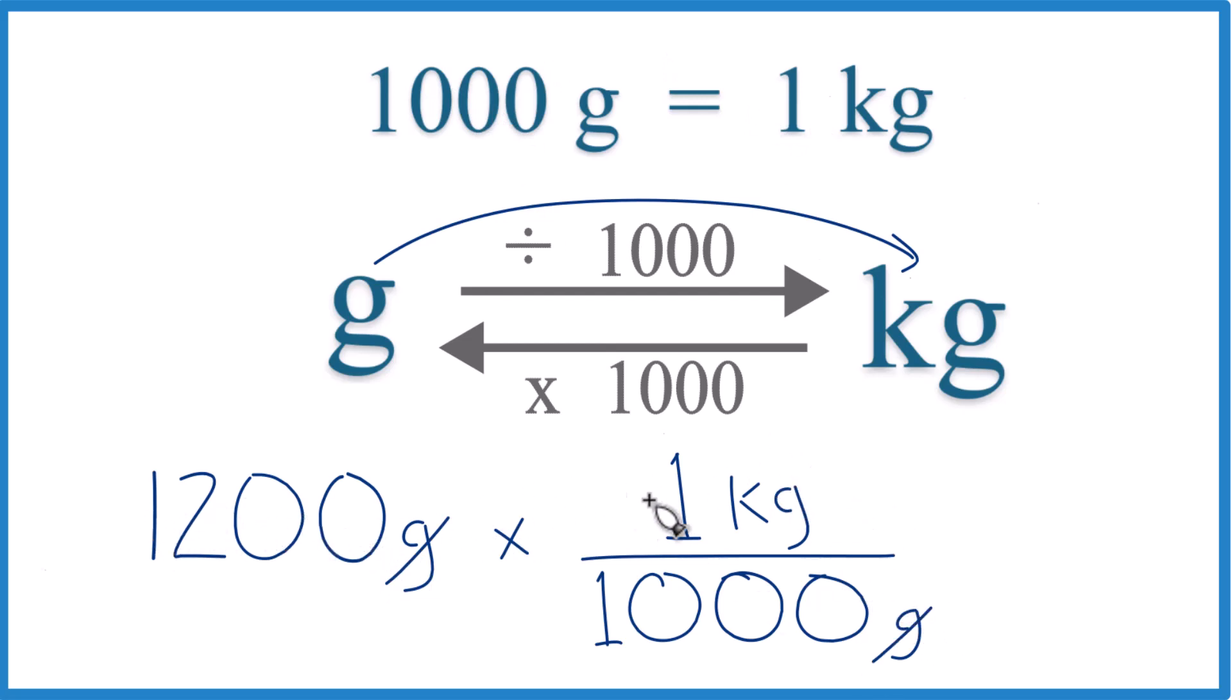1,200 times 1. That's 1,200 kilograms. Divide by 1,000. You get that same answer. 1.2 kilograms. This is Dr. B converting 1,200 grams to kilograms. Thanks for watching.